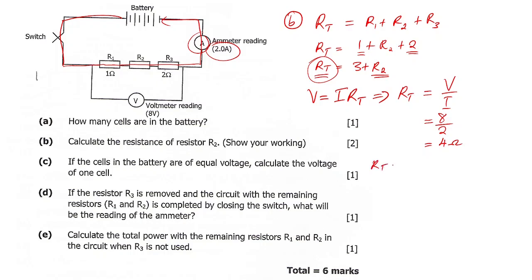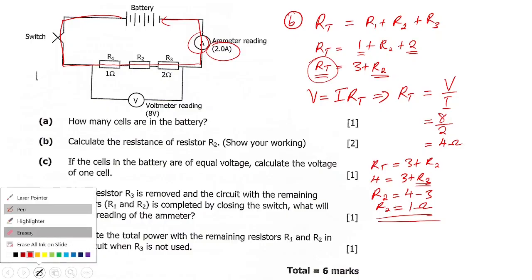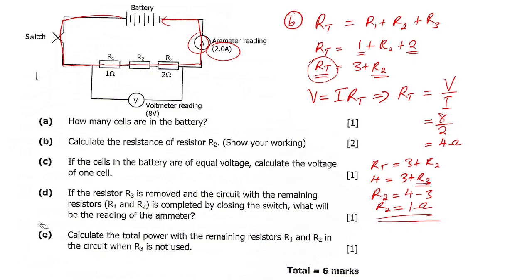Now substituting back: R_total = 3 + R2, so 4 = 3 + R2. Making R2 the subject: R2 = 4 minus 3 = 1 ohm. So resistor R2 equals 1 ohm.